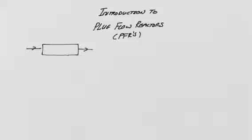Today we're going to look at the introduction to a plug flow reactor. A plug flow reactor is basically a tubular type of reactor, typically where material enters and the material that enters together stays together and flows through in a plug until it leaves the reactor.